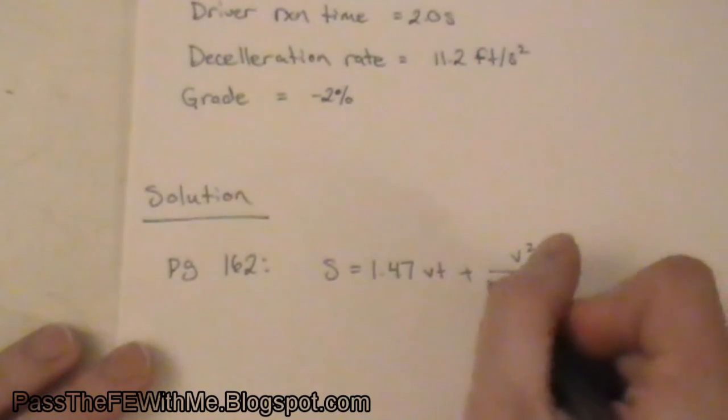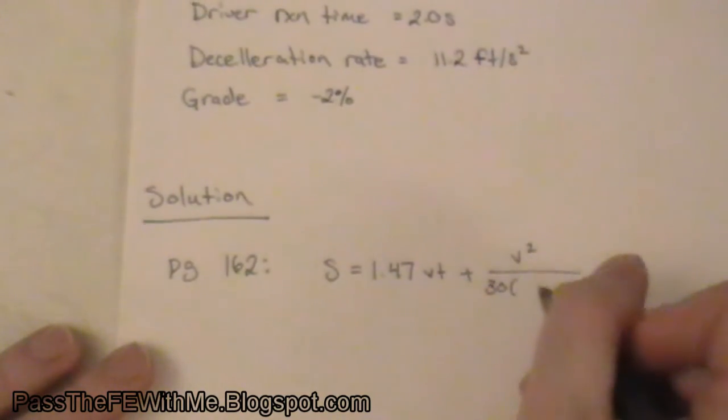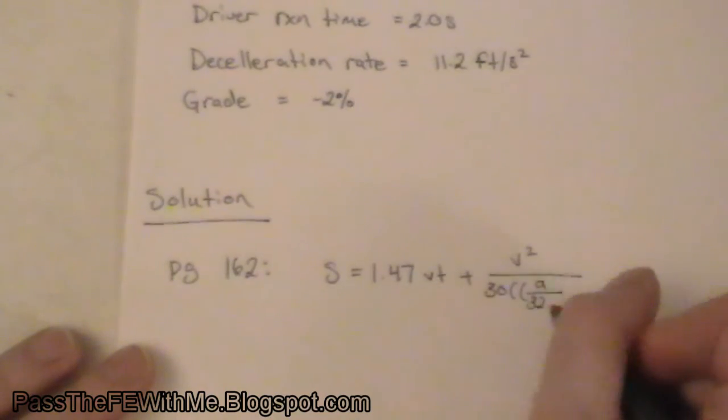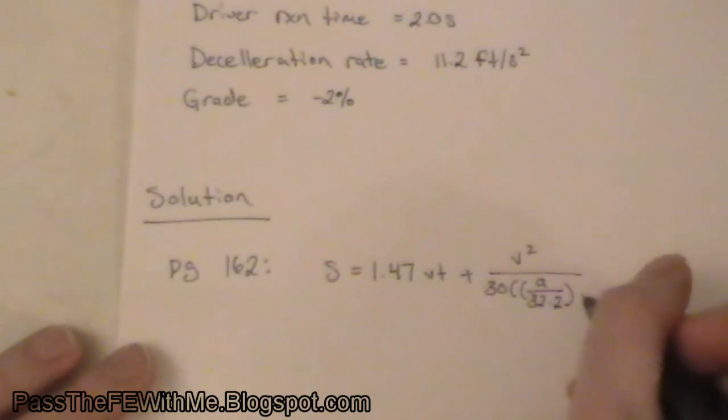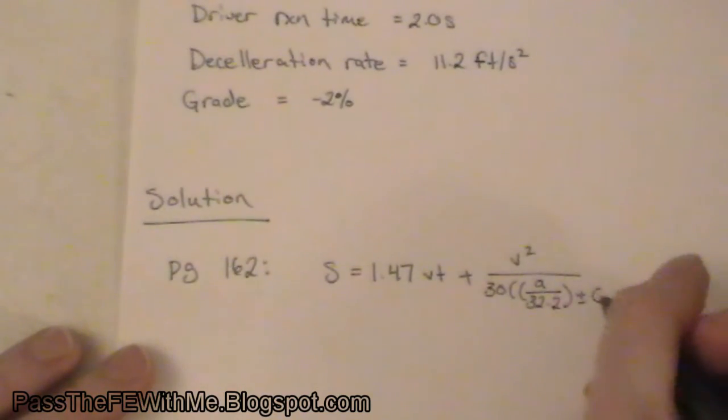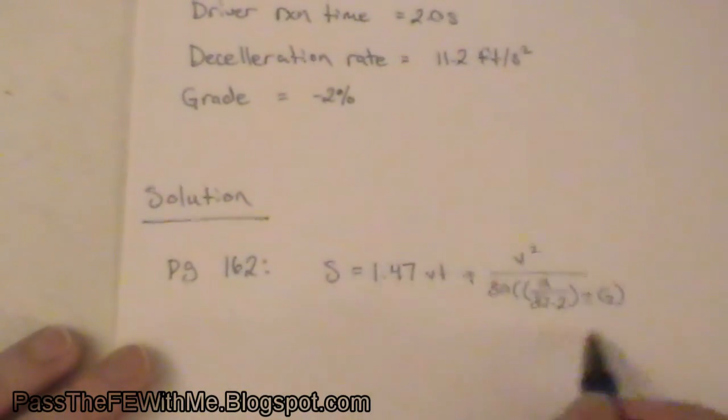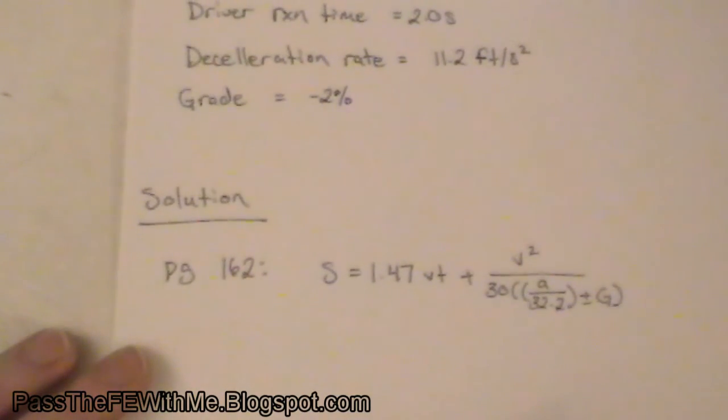The first part corresponds to the amount of time it takes the driver to react if they were to see a big boulder or giant truck or something stopped in the road ahead of them. The second part of it is the amount of time it actually takes the vehicle to stop once they start braking.